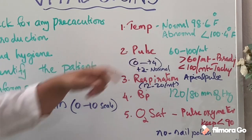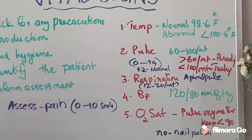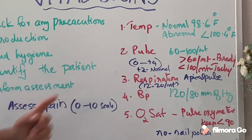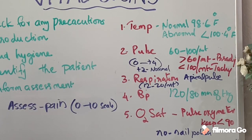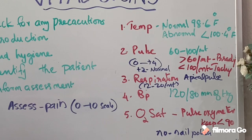There are five components to vital signs. First, check the temperature using a thermometer. Normal adult oral temperature is 98.6°F; 100.4°F or greater is considered a fever. Before taking oral temperature, ask the patient if they have eaten or drunk anything hot or cold in the last 30 minutes. If yes, use a different route such as axillary — and add one degree for axillary readings.